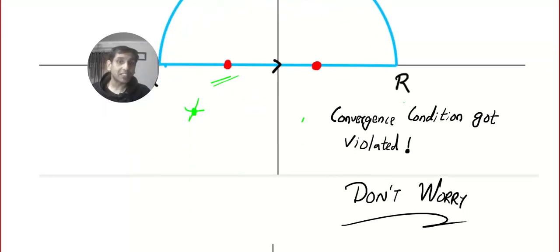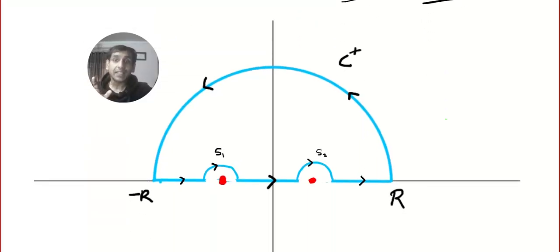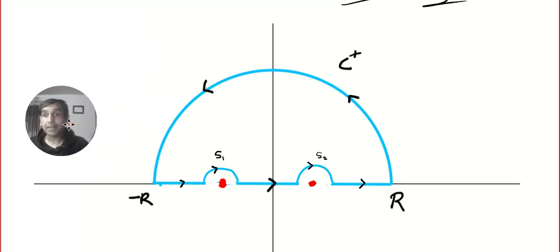But don't worry, don't worry, there is a method. So in case they ask such questions in your examination, all you have to do is just bypass. Because there is a troublemaker, I'm making a small semicircle, or you can imagine a circle if you want, a small semicircle with center minus 1.